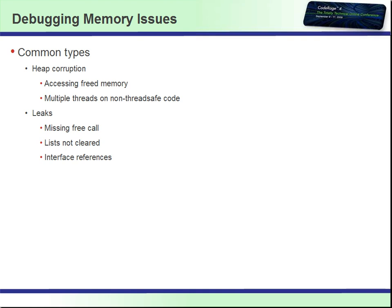Let's talk a little bit about debugging memory issues. There are two primary types of memory issues. There's heap corruption, which occurs most often when somebody's accessing memory that has been freed already, or when code executing on multiple threads is not thread-safe and leaves memory in a corrupted state. The other common type is memory leaks — the obvious missing free call when you have an allocated object, lists getting filled up and not being cleared out, and another fairly common cause: interface references that are never released because the reference count doesn't go back to zero.